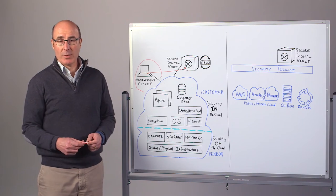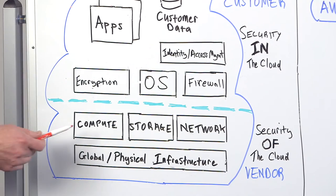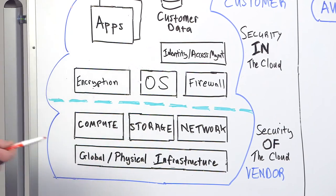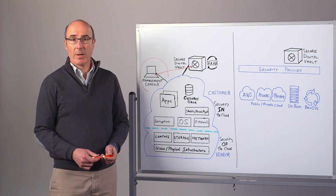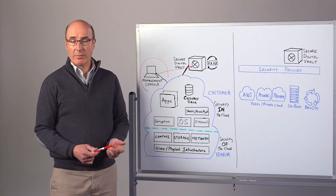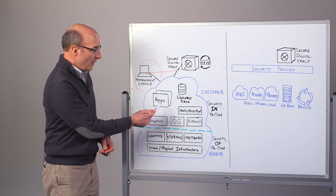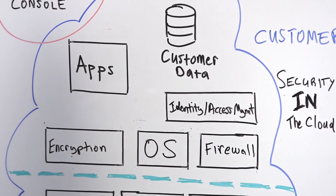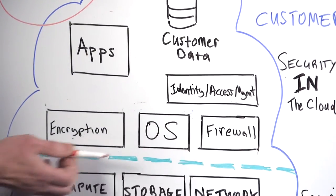Next, the cloud vendors do a lot to ensure the security of the cloud infrastructure, including the compute, storage, and networking functions, as well as the global and physical infrastructure. But, and it's an important but, as each of the public cloud vendors point out, security in the cloud is a shared responsibility. You, as the application owner, are responsible for protecting your applications, the OS, the infrastructure, and other assets actually in the cloud. Really, everything above this sort of hypervisor level is your responsibility.